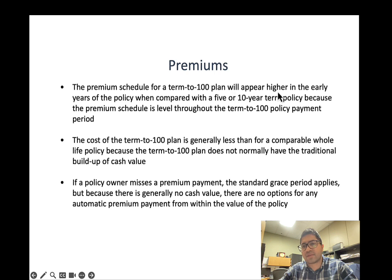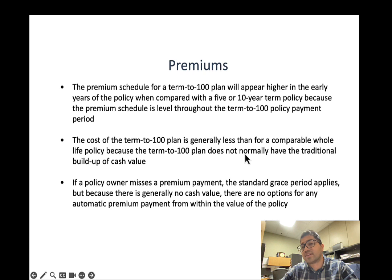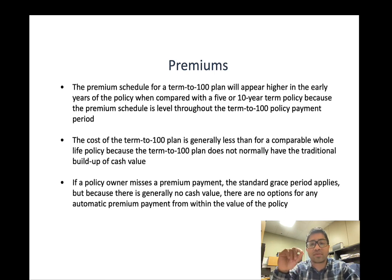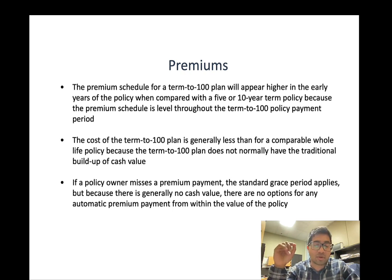The premium schedule for a Term 100 plan appears higher in the earlier years compared to a 5-year or 10-year term policy because premiums are level throughout. The cost is generally less than a comparable whole life policy because Term 100 does not normally have traditional cash value buildup. If the policy owner misses a premium payment, the standard grace period applies, but because there is no cash value there are no options for automatic premium payment — the policy will lapse.